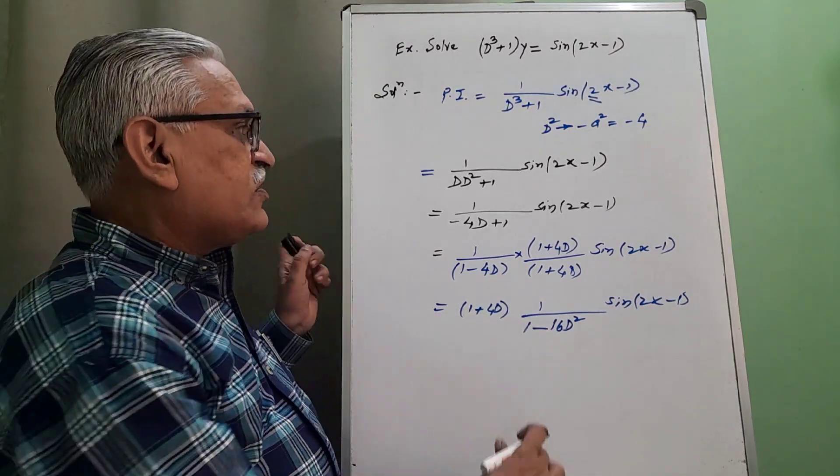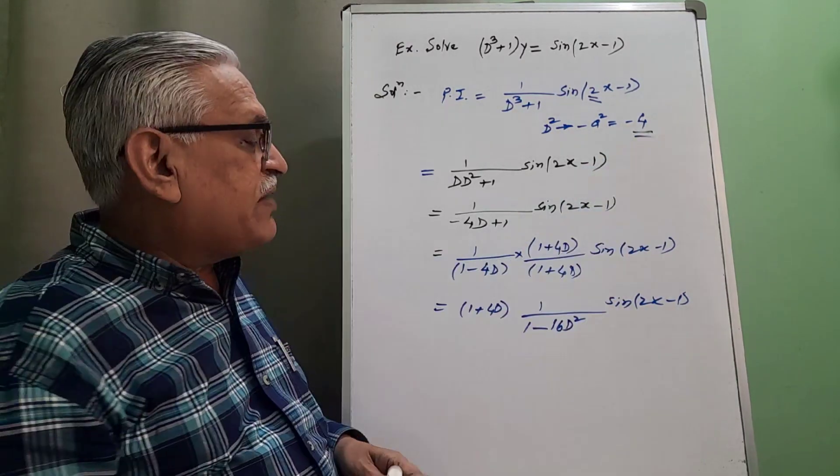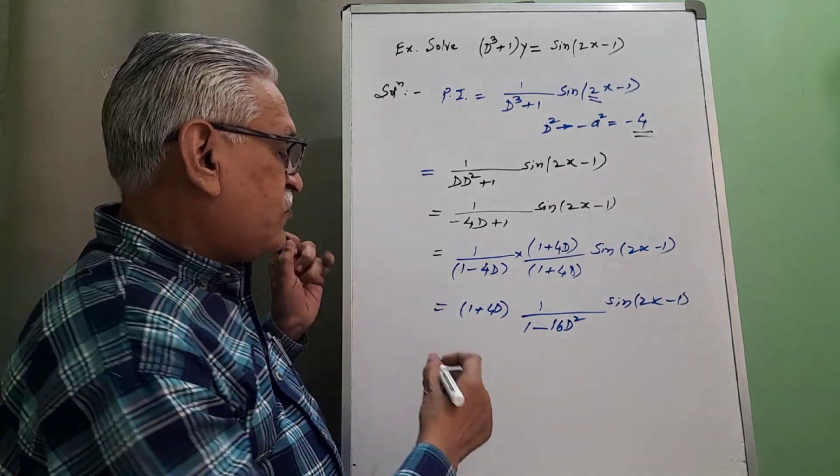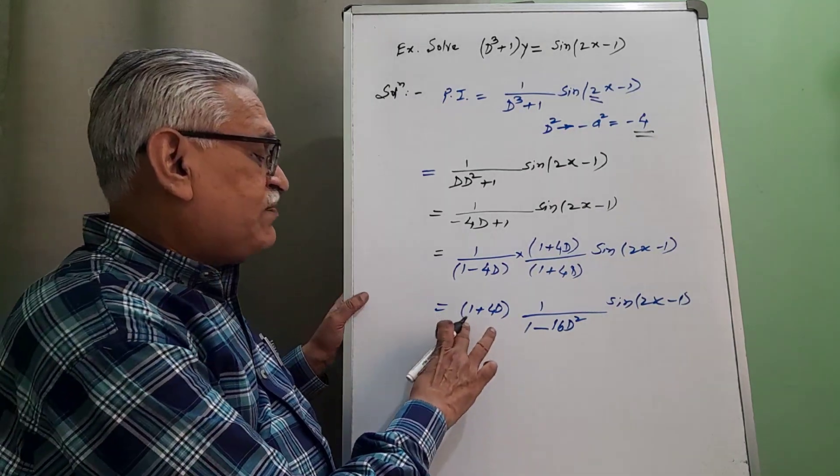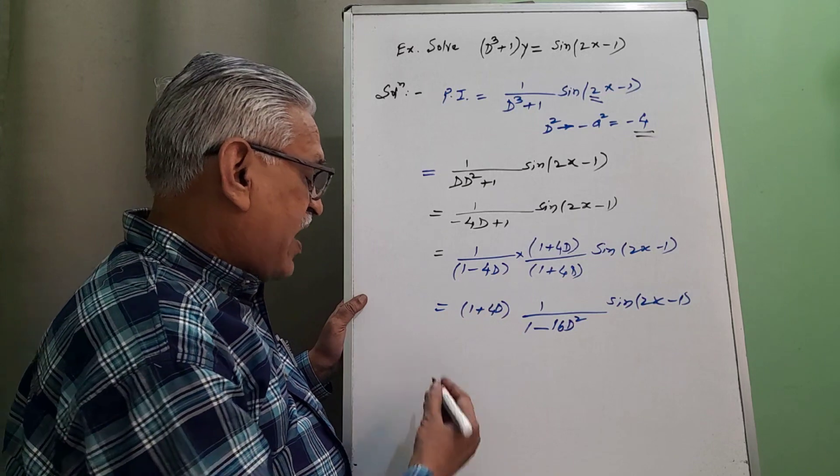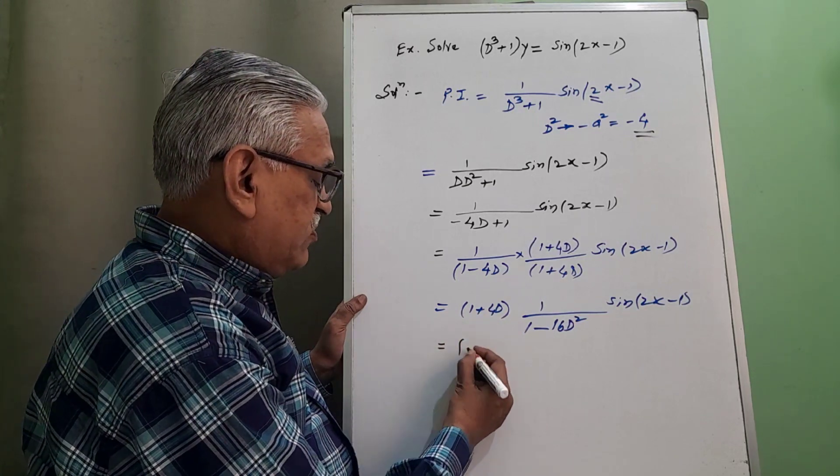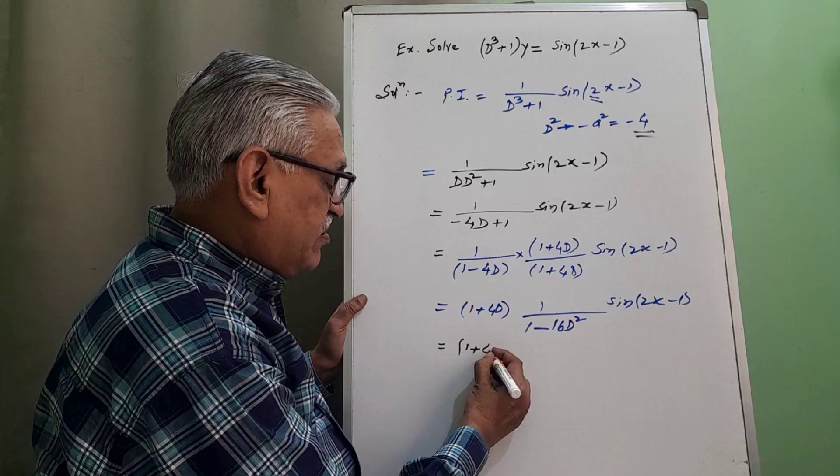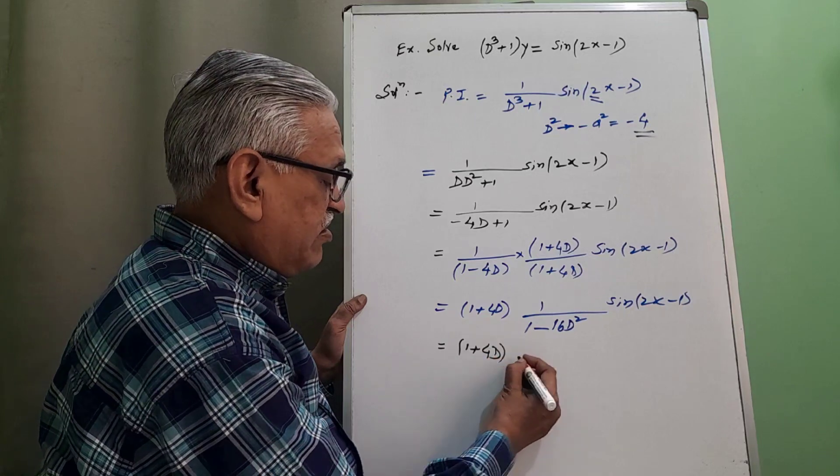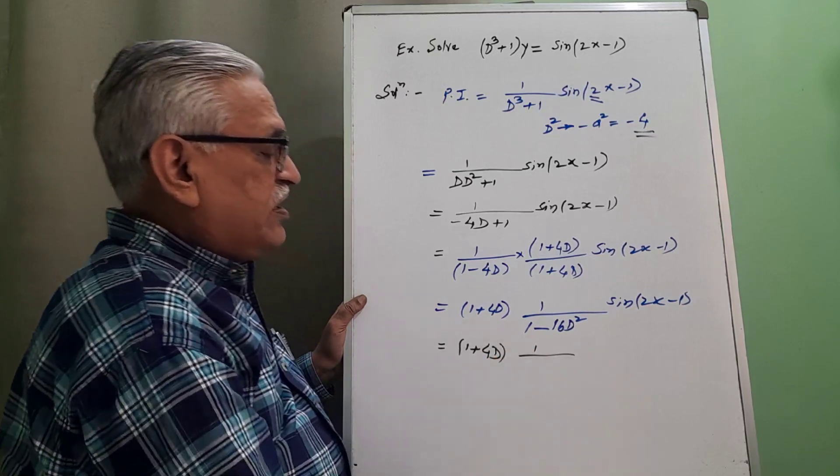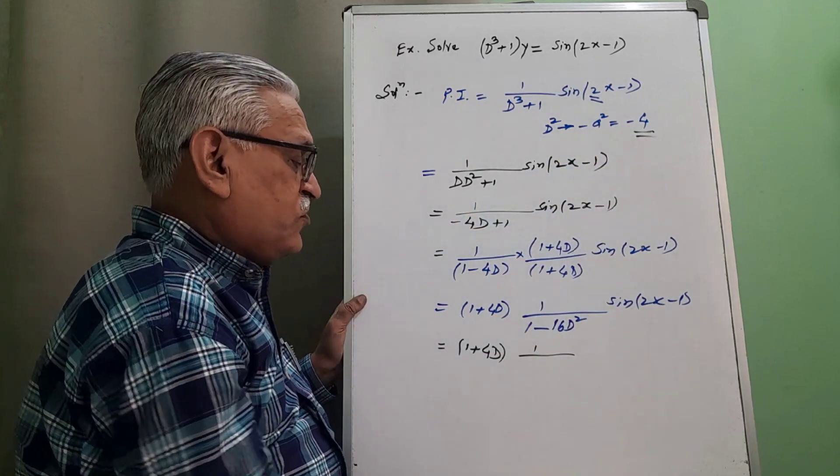And as we have the term of d square, once again replace it by minus 4. And therefore we have, therefore this 1 plus 4d we keep as it is in the numerator, 1 plus 4d, 1 upon this square replaced by minus 4.